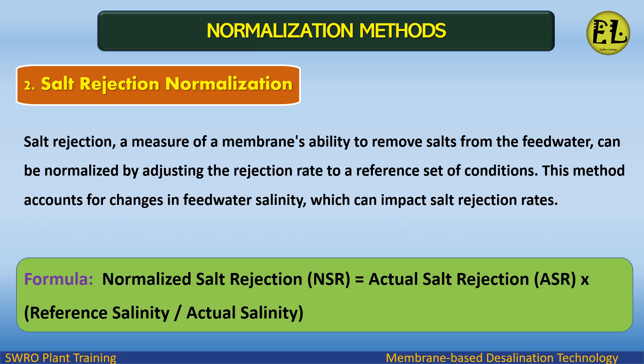Salt rejection normalization: salt rejection — a measure of a membrane's ability to remove salts from the feed water — can be normalized by adjusting the rejection rate to a reference set of conditions. This method accounts for changes in feed water salinity, which can impact salt rejection rates. The formula is: Normalized Salt Rejection (NSR) = Actual Salt Rejection (ASR) × (Reference Salinity / Actual Salinity).